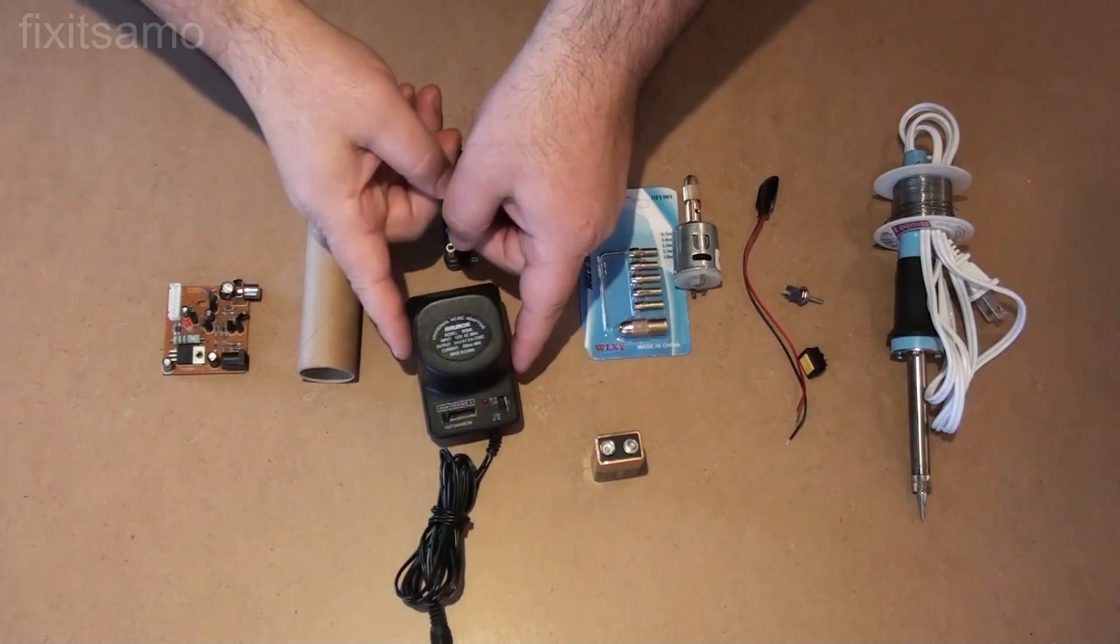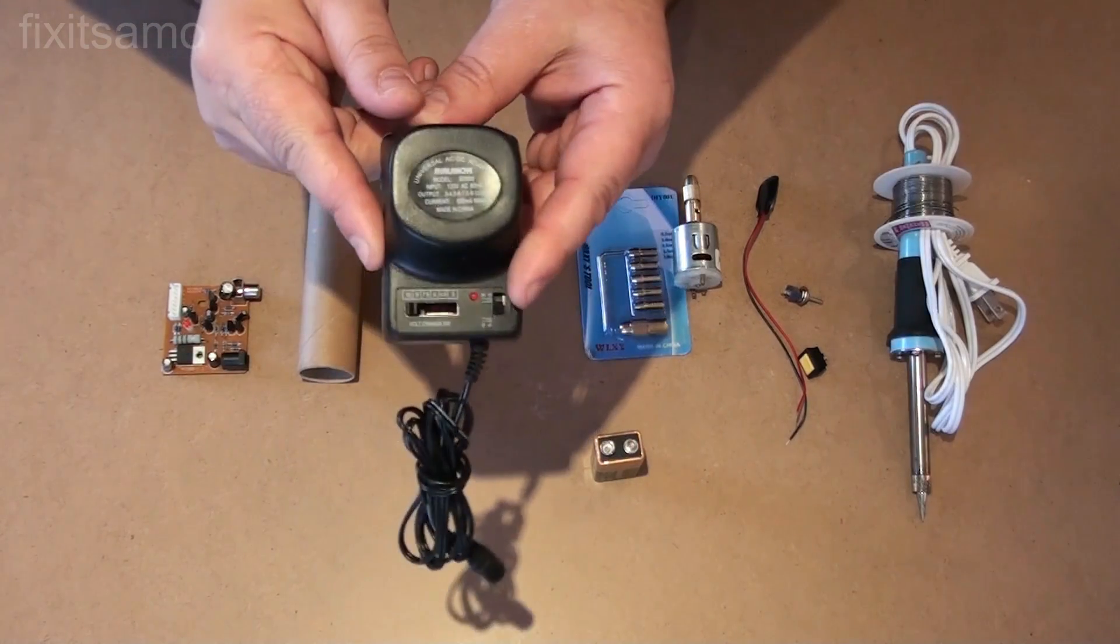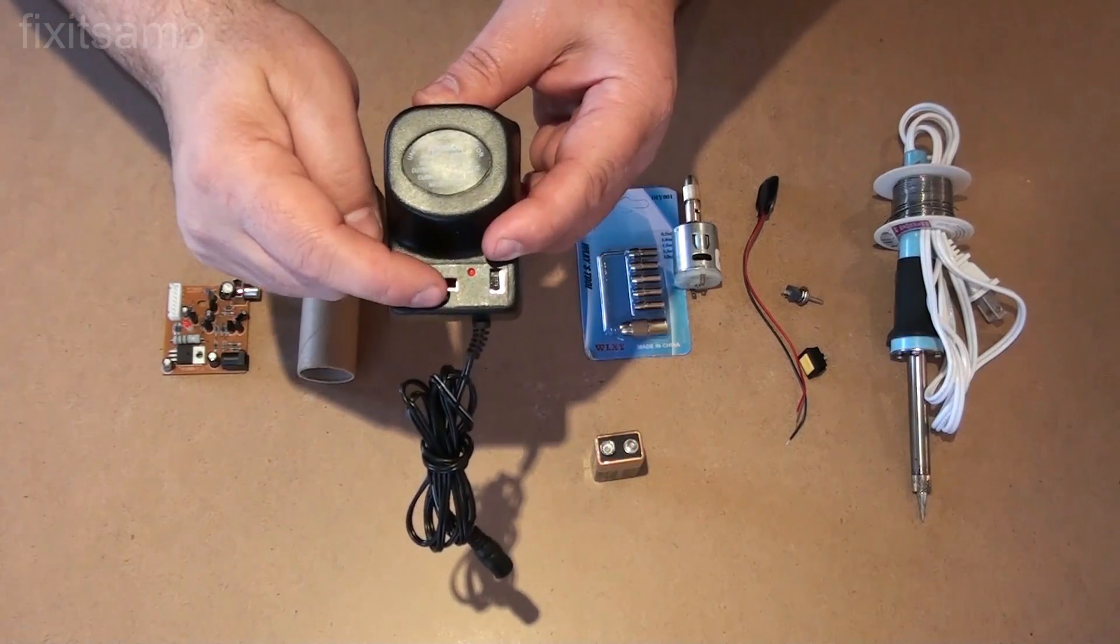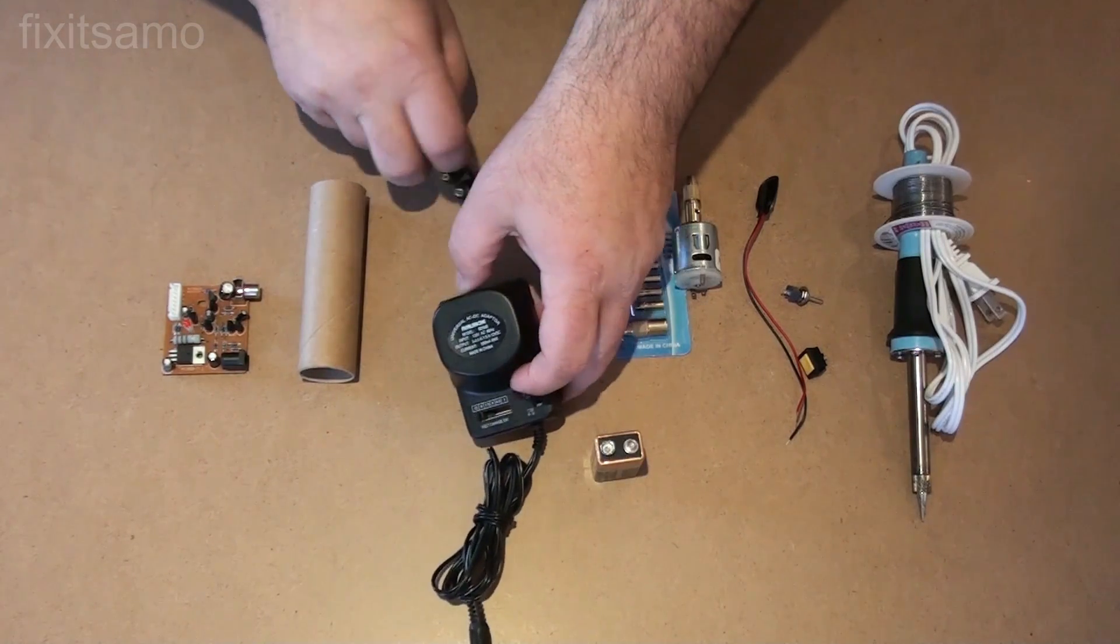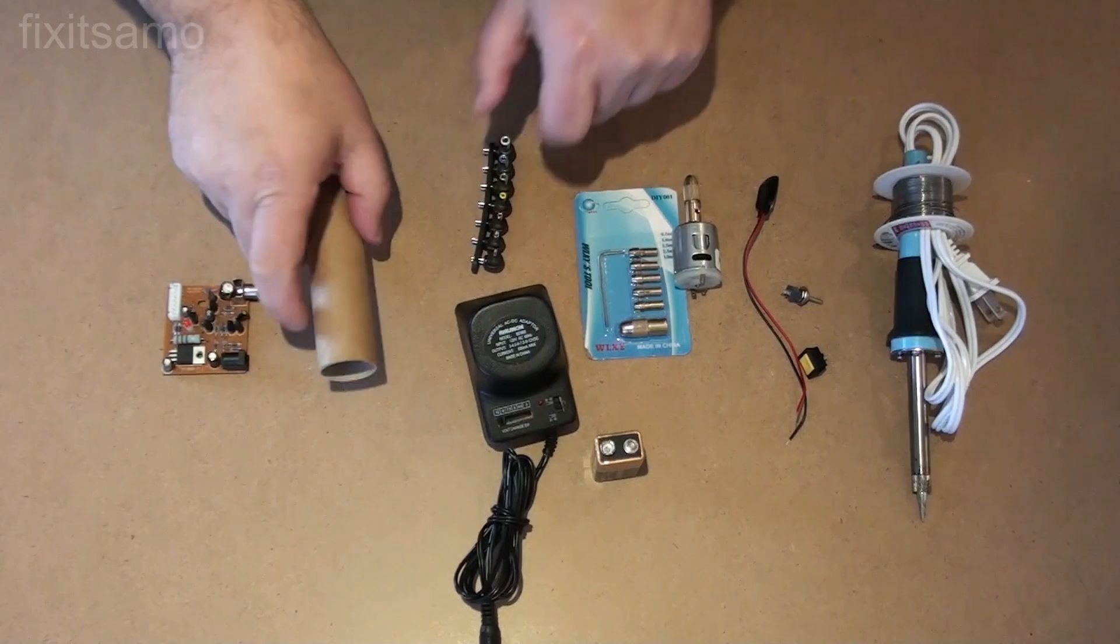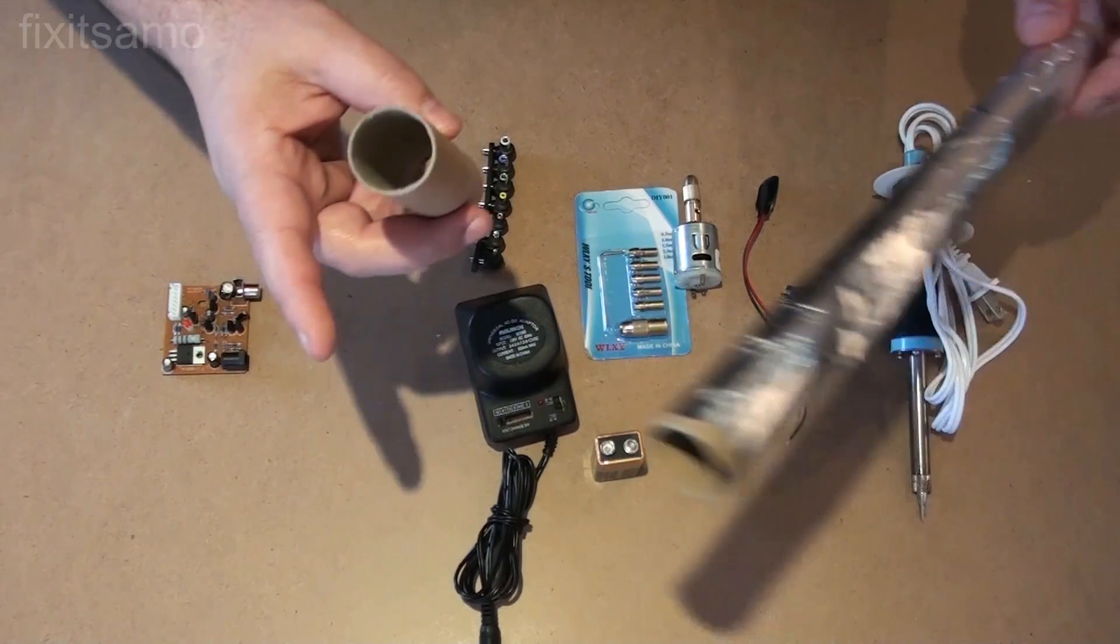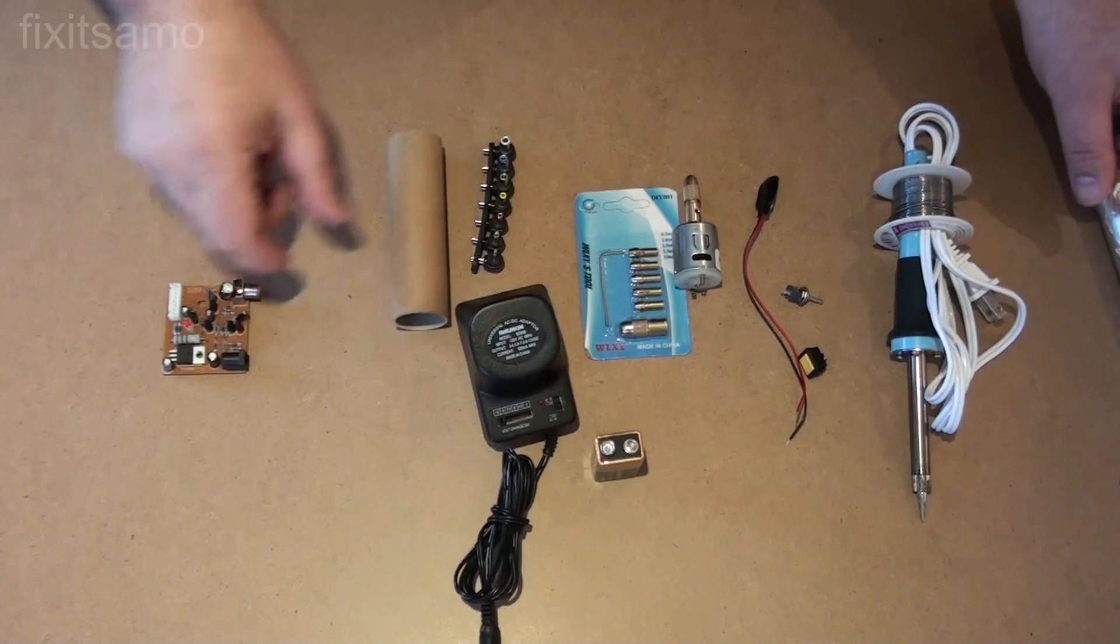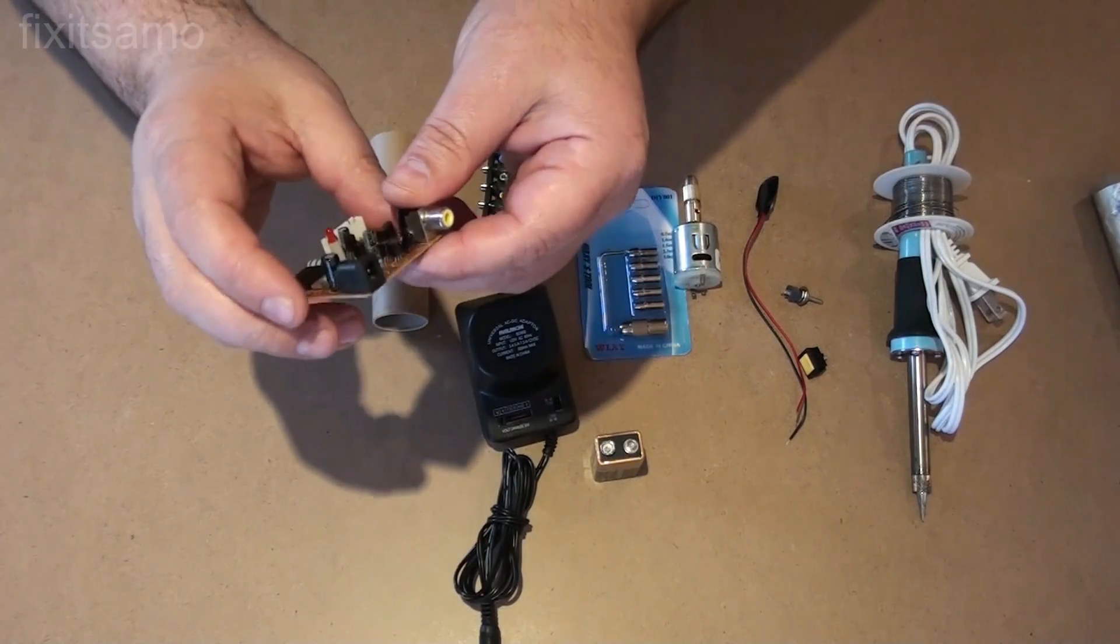We have over here an AC DC adapter that you can switch from 3V to 12V and it comes with all these connections over here. The cardboard that I'm using from my aluminum foil, and at the end I've got this old receiver.